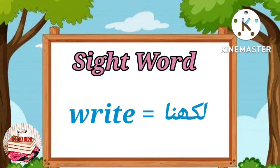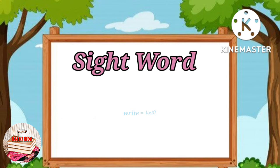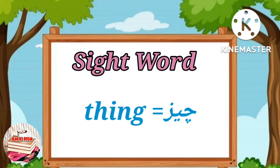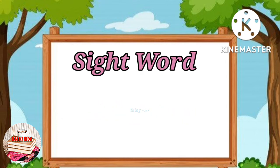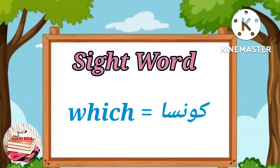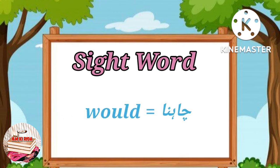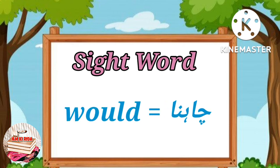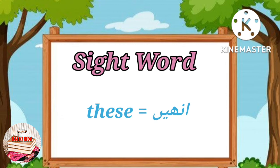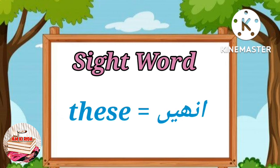More - Meaning: ज्यादा. Other - Meaning: इसके अलावा. Their - Meaning: वहाँ. Right - Meaning: लिखना. Thing - Meaning: चीज़. Which - Meaning: कौन सा. Wood - Meaning: चाहना.